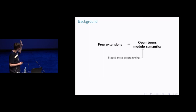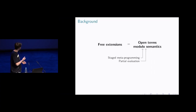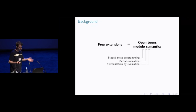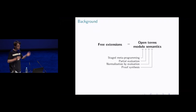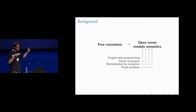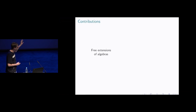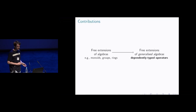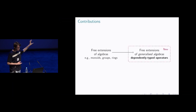This is useful in all kinds of areas: staged metaprogramming, where you're producing code that might have unknowns in it and you might want to optimize that computation; partial evaluation; normalization by evaluation — reducing expressions to the most normal form even in the presence of free variables; and it's also extremely useful for proof synthesis. Proof by normalization: normalize the left-hand side, normalize the right-hand side, see if they're equal — if so, you've got a proof that the original terms were extensionally equal. At the moment we focus on free extensions of algebras — monoids, groups, rings. But what we're really interested in is free extensions of generalized algebras, which are algebras with dependently typed operations.